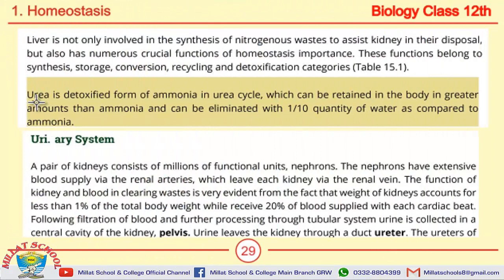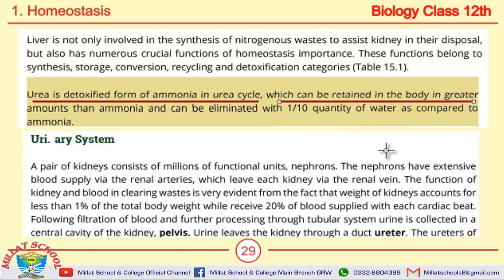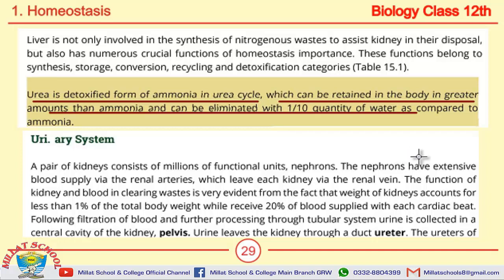An important MCQ: urea is the detoxified form of ammonia produced in the urea cycle. Urea can be retained in the body in greater amounts than ammonia and can be eliminated with only 1/10th the quantity of water compared to ammonia.